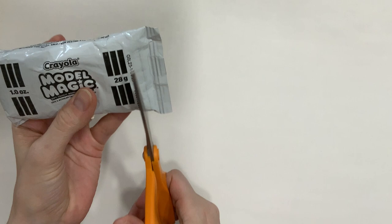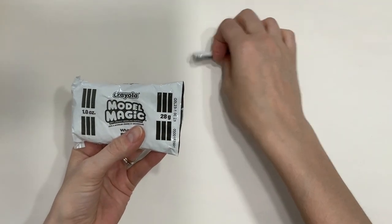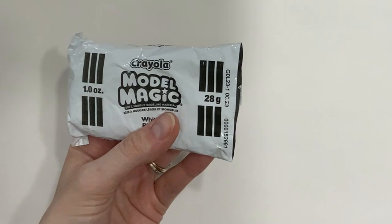Begin by cutting off the edge of the Model Magic wrapper. I like to cut it here because later I can put the Model Magic that is unused back in and seal the opening. That way my Model Magic won't dry out before I'm ready for it to.